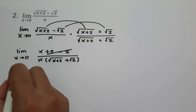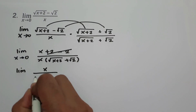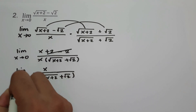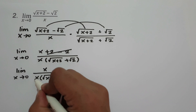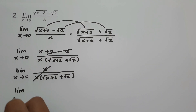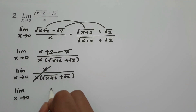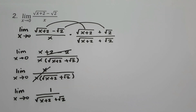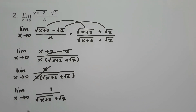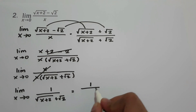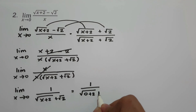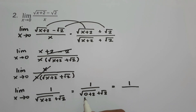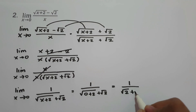And then let's have x multiplied by square root of x plus 2 plus square root of 2 in the denominator. So we can cancel x plus 2 minus 2 in the numerator, giving x over x times the quantity square root of x plus 2 plus square root of 2. So let's cancel x, and we have the limit as x approaches 0 of 1 over square root of x plus 2 plus square root of 2.